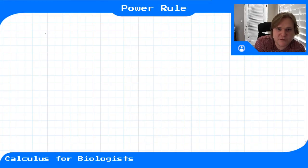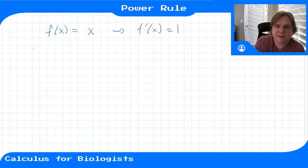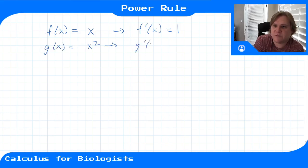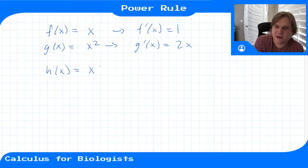In previous videos we've shown how to compute the derivatives of f of x equals x — that just gives you the slope of that line, 1. We showed that the derivative of x squared was g prime of x equals 2 times x. So you might be wondering what would be the derivative for a function of some other power of x, x to the n.